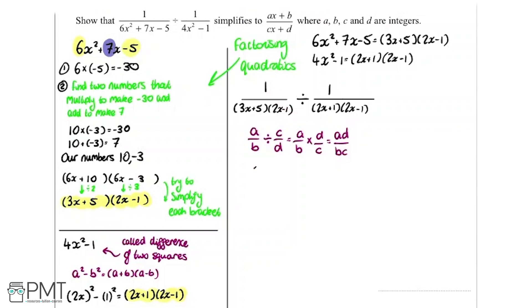So doing that to this, we're going to be left with 2x plus 1 multiplied by 2x minus 1 on the top, all divided by 3x plus 5 on the bottom and 2x minus 1 on the bottom like that.